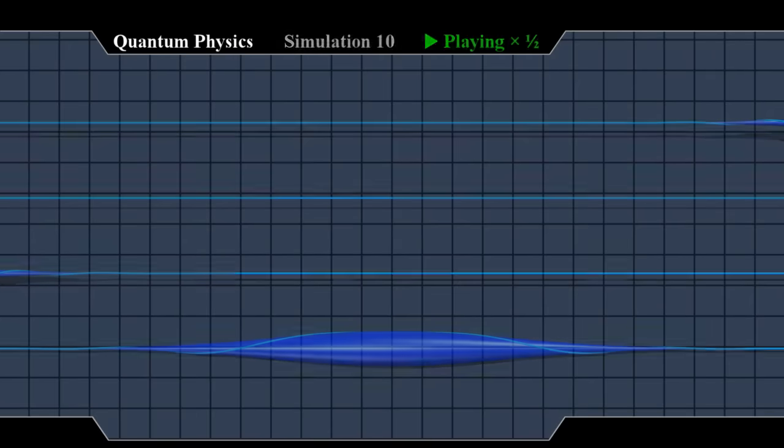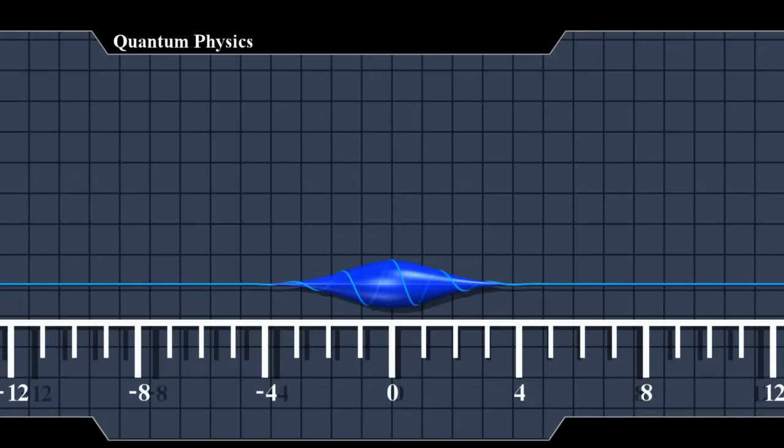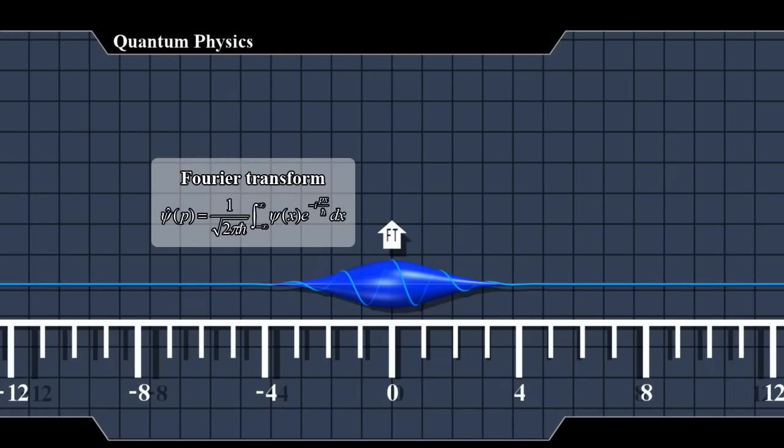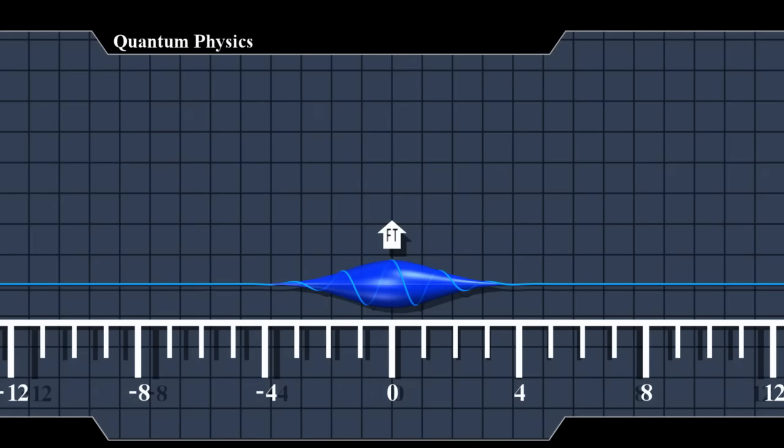Here's how we make this information more readable. We'll use a mathematical operator called the Fourier transform. It decomposes the wave function into the frequencies that make it up, creating a new wave function.